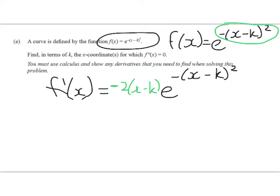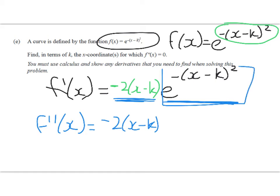For the second derivative, I'm going to be using the product rule. I'm going to use this as the first factor and this is the second one. f''(x) and off we go. Well, we'll leave the first function. So -2(x - k) times the derivative of this. That's easy because we've just done that. So it's times -2(x - k) e^(-(x-k)^2). Really neat. Plus, what have we got next?